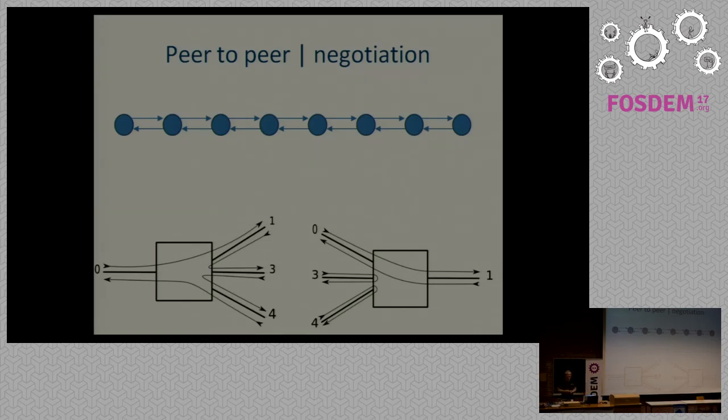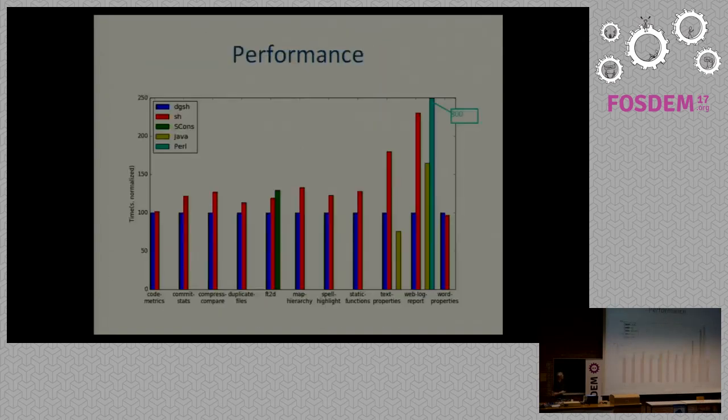So do you have any numbers on the speedup you can achieve on daily tasks, for instance? Yes, thanks. So this is the time for DAGSH, the blue one. The red one is with shell, with the temporary files. And for some programs, I also implemented them in Java or Perl, and the time was a lot longer. But of course, DAGSH uses more cores, so it can be a lot more efficient. So you typically get the speedup, especially if you can use more cores.